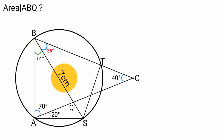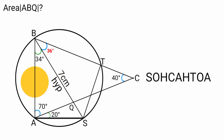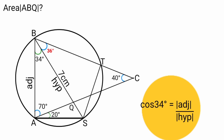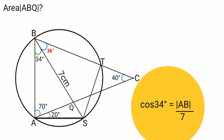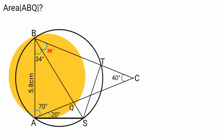From this right-angled triangle, BS is the hypotenuse since it faces the right angle, and AB is the adjacent side. Using CAH: cos(theta) equals adjacent over hypotenuse. With theta as 34 degrees and hypotenuse as 7 centimeters, we get cos(34°) equals AB over 7. Making AB the subject: AB equals cos(34°) times 7, which is approximately 5.8 centimeters.